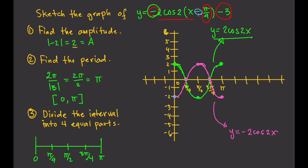So this point moves pi over 4 units to the right. And negative 3 means going 3 units down — so 1, 2, 3. Each key point shifts pi over 4 units to the right and 3 units down to its final location. The final locations of all the translated points are now plotted.